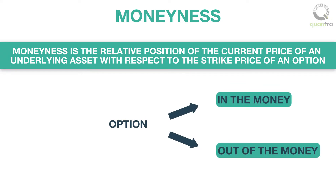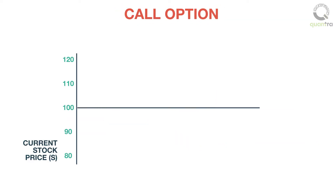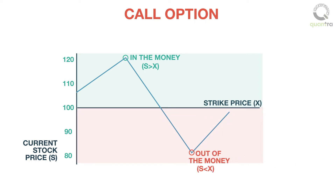For a call option, if the underlying price is greater than the strike price, then the call option is said to be in the money. Similarly, if the underlying price is less than the strike price, then the call option is said to be out of the money. When the underlying and strike are at the same price level, then the option is at the money.